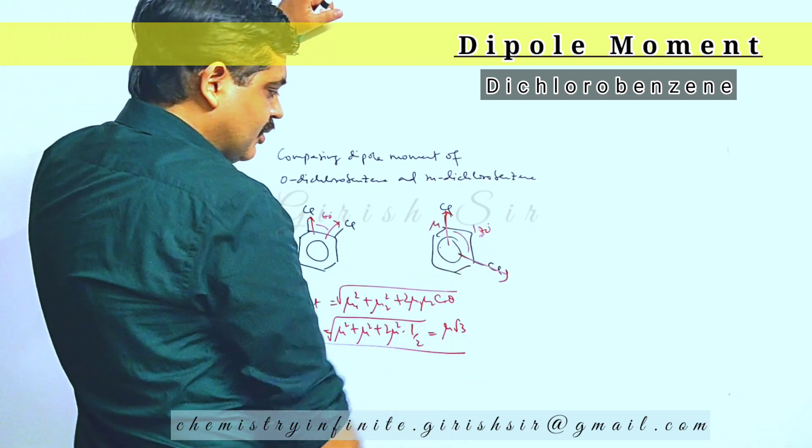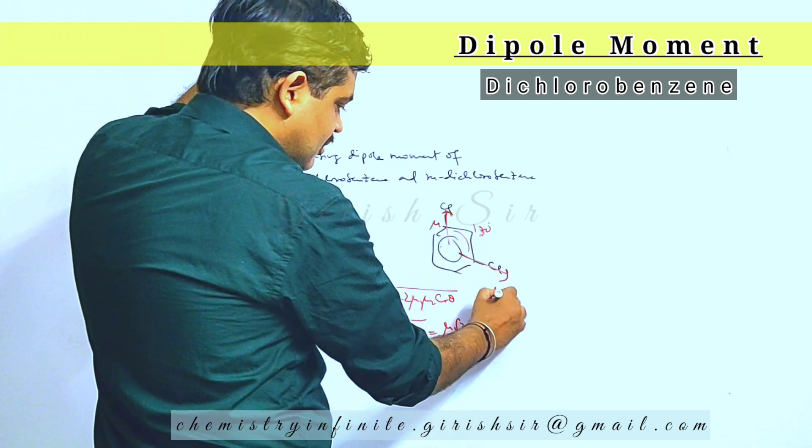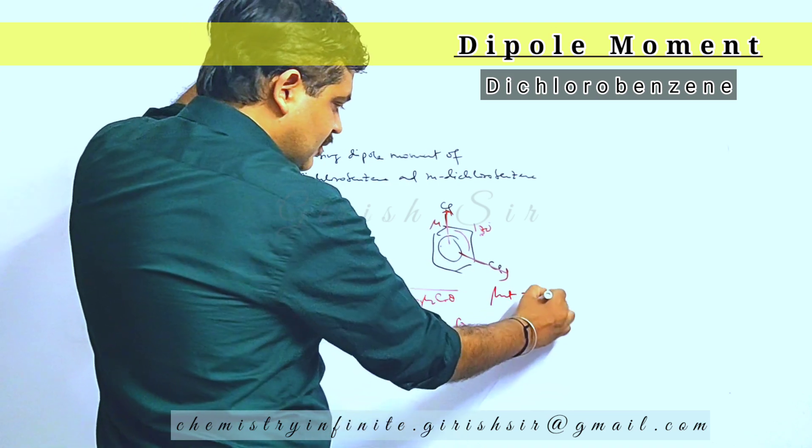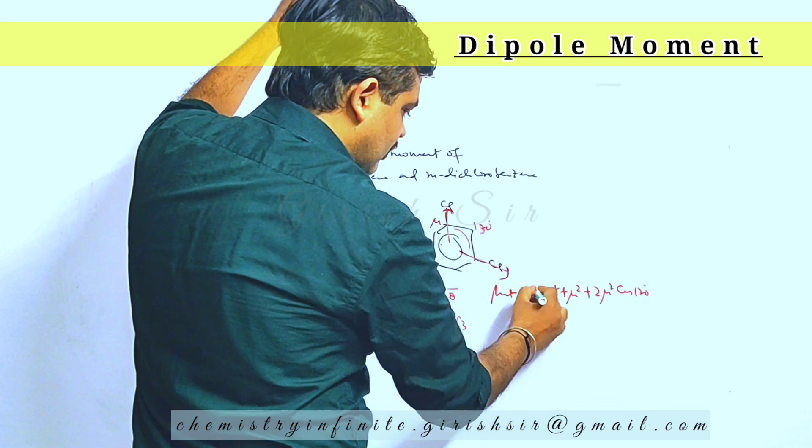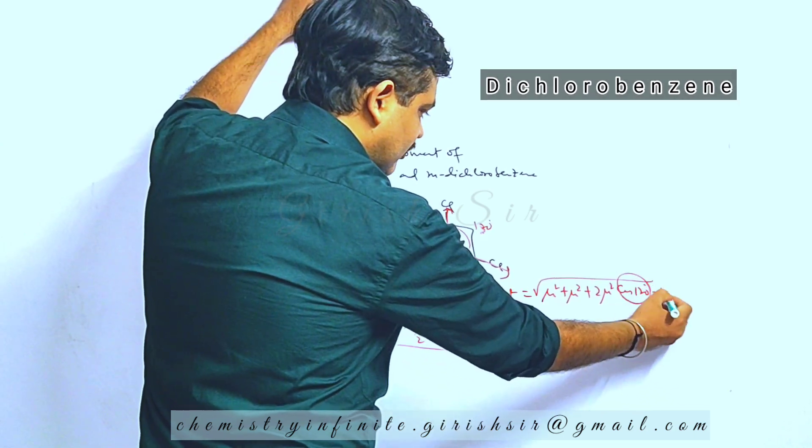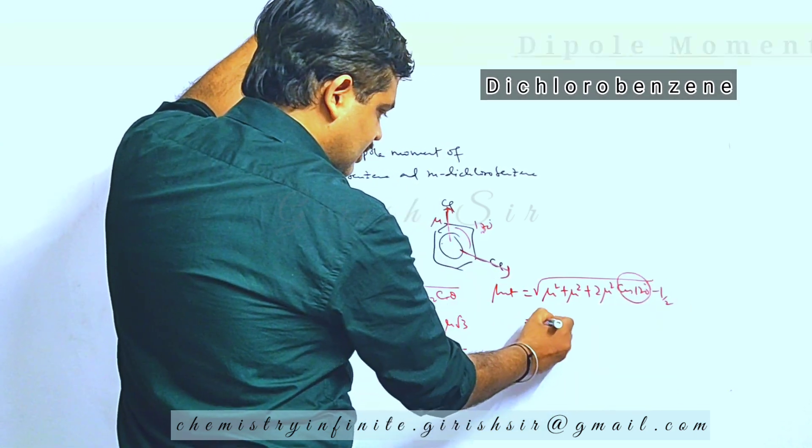Which is 1 by 2. This will give you mu root 3 as a result. While in case of meta-dichlorobenzene, mu net using the same formula, here we have cos 120.